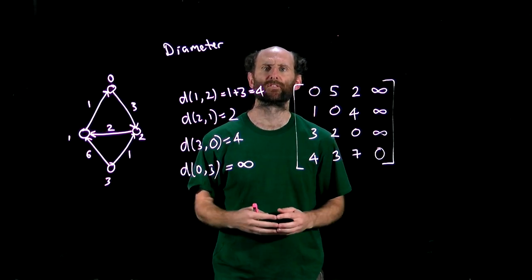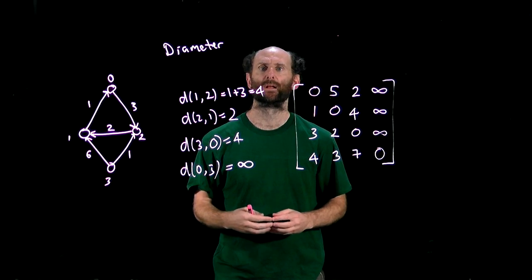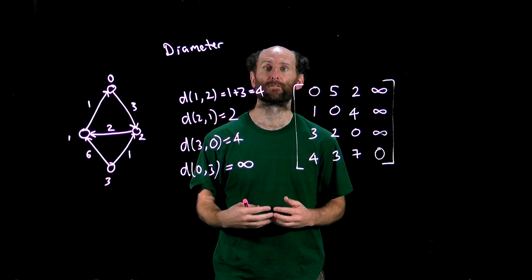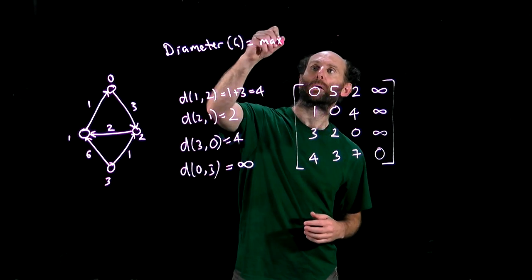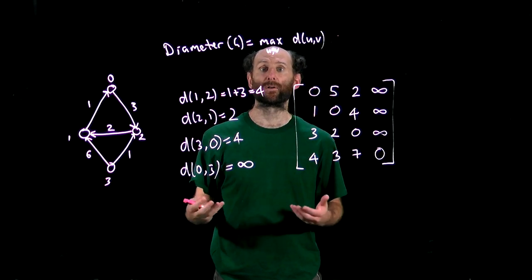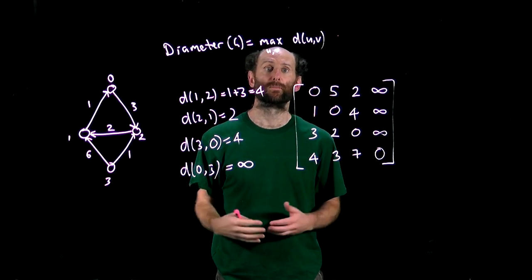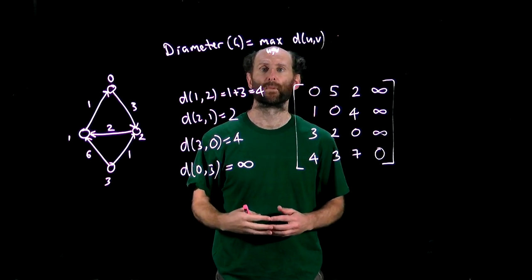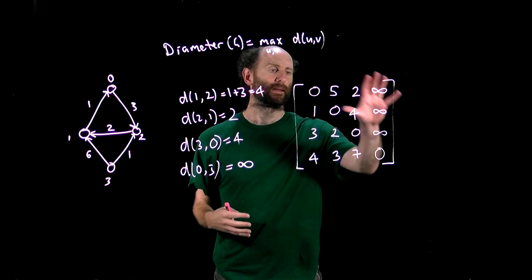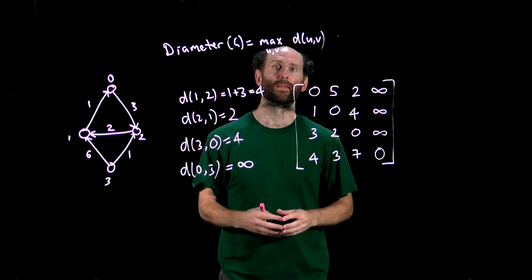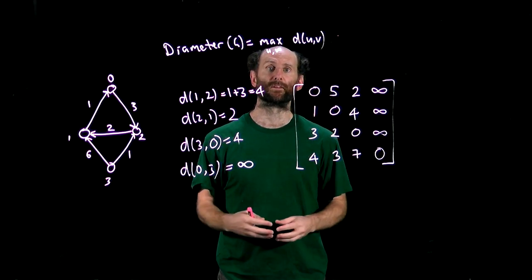We'll define the diameter of a strongly connected digraph G to be the maximum over all possible distances in the graph. That is if the digraph is not strongly connected the diameter is undefined though often we'll set that to be infinity. So using that definition clearly the diameter is simply the maximum entry in the distance matrix.